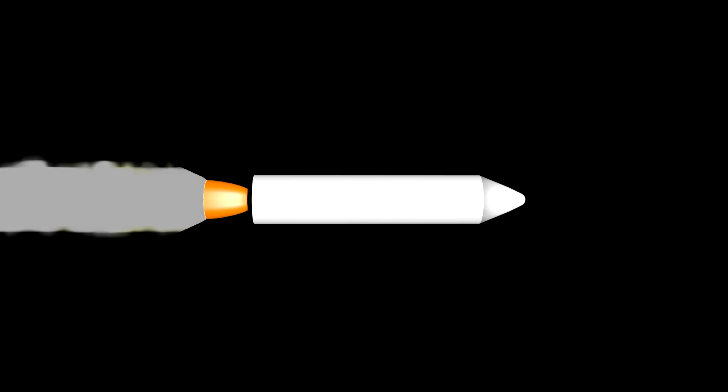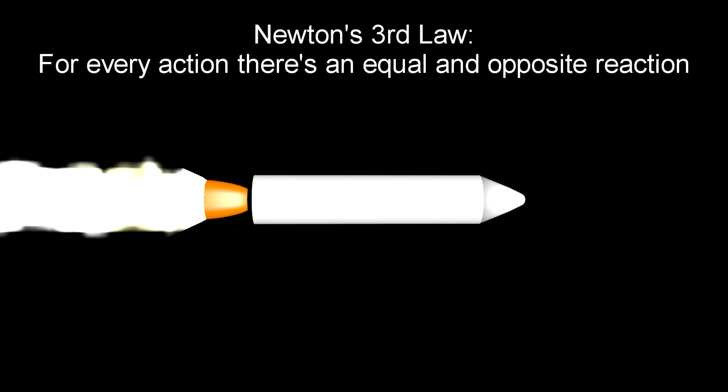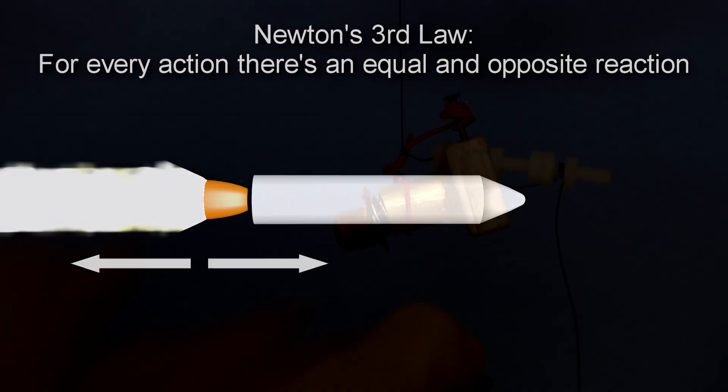A rocket works by throwing stuff out the back, literally. It makes use of Newton's third law: for every action there is an equal and opposite reaction. If the action is to toss something to the left, then the reaction will be that the tosser will be moved to the right. I'll demonstrate using this spring-driven rocket.